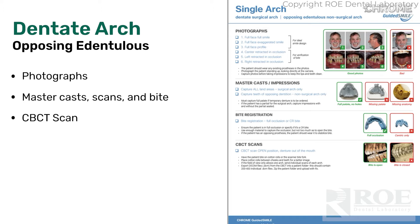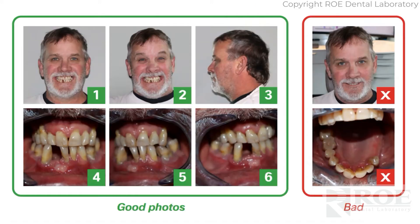Let's start with the photographs. The particular photographs are very important because we use these photographs to make sure that we have the case articulated properly. If we're working on a lower arch, seat the upper denture, make sure that it's seated exactly in the repeatable bite, and then capture photographs center, left and right. Then we would like a full face full smile and a natural smile and an exaggerated smile.